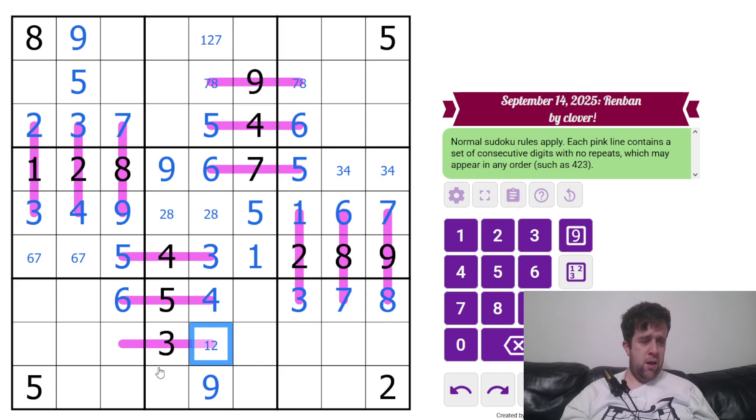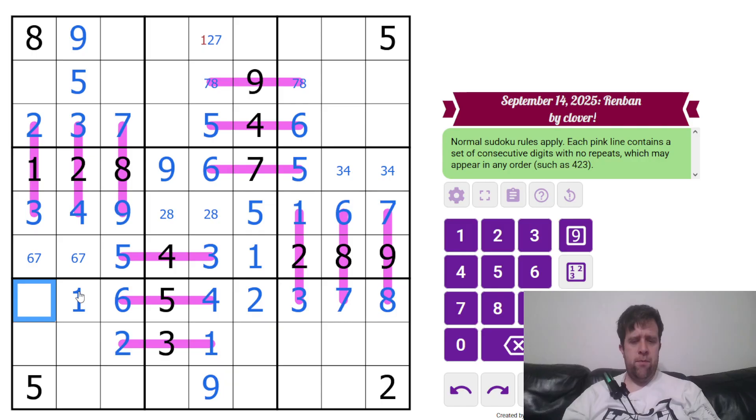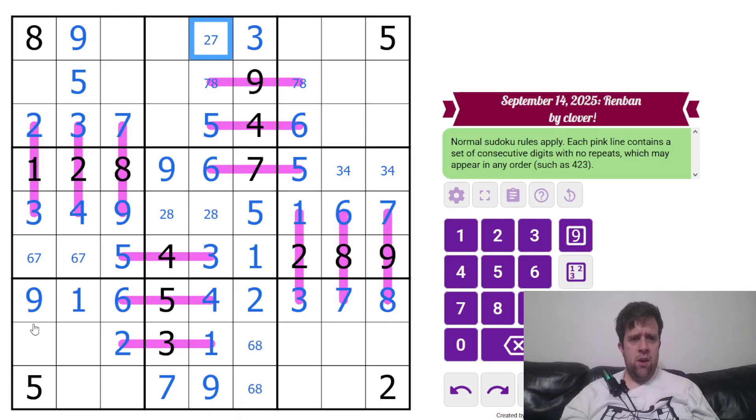This cell is a naked single. Can't be 1 or 9, 4, 5, 6, 3, 7, 8. Must be a 2. It forces a 1 there and a 2 there. 1 over here, 9. 7 goes over here. This is a 6 and an 8. This is a 3. Take the 1 off.